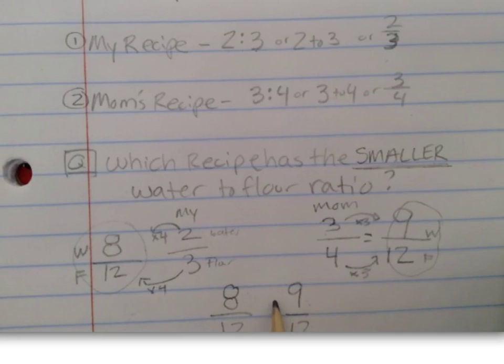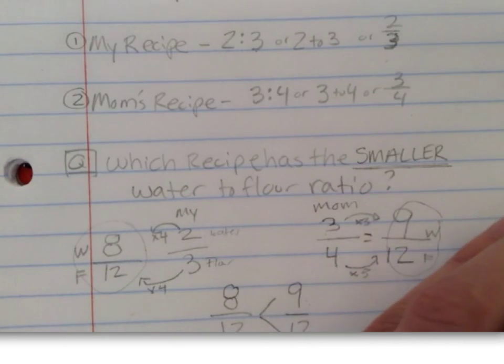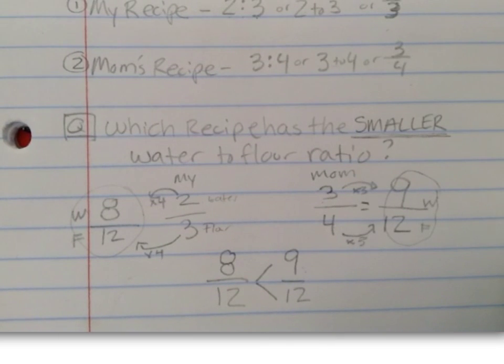And that happens to be my recipe. So if I'm comparing it using inequality, I would have eight cups of water for every 12 cups of flour for my recipe. So my final answer would be my recipe.